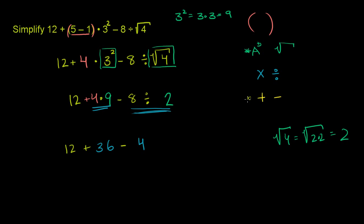And now we're finally at this stage of our order of operations, so we can just evaluate. What is 12 plus 36? I'll do this right here. 12 plus 36 is 48. So we have 48 minus 4. And when you evaluate that, 48 minus 4 is just 44. And we're all done.